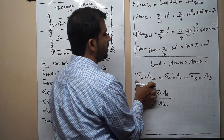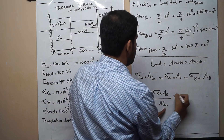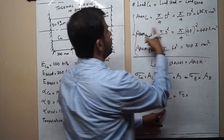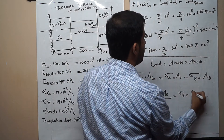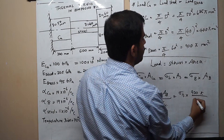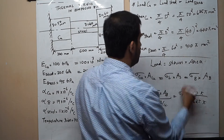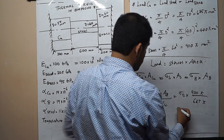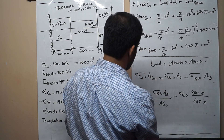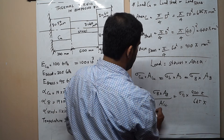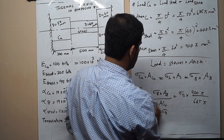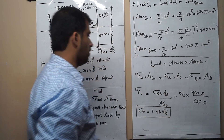On cancelling π, we get σ_copper = (900/625) × σ_brass = 1.44 σ_B. This is our first relationship.